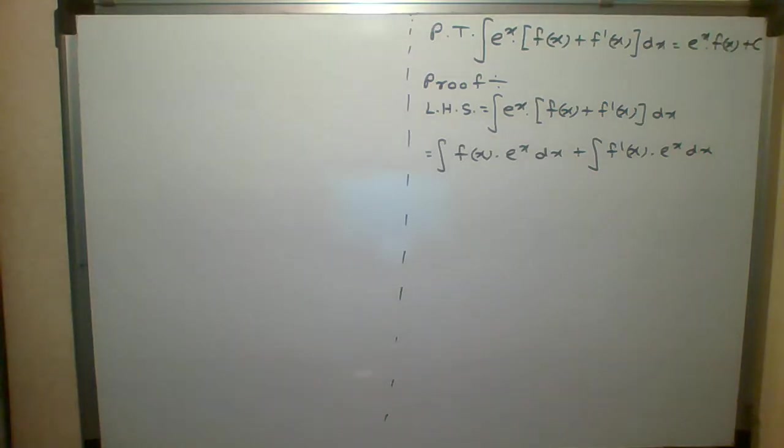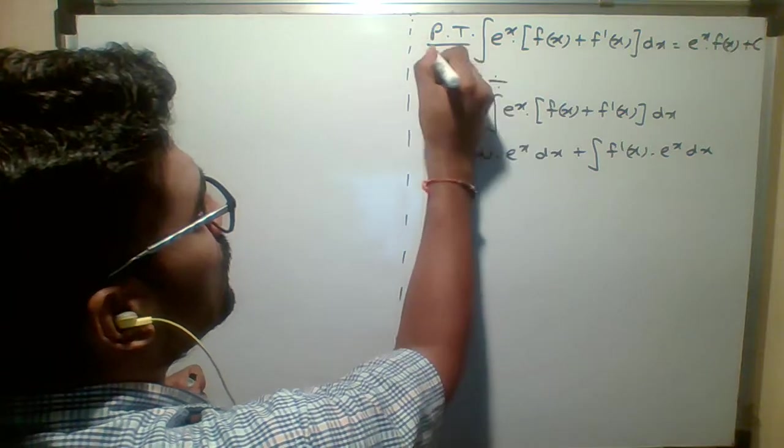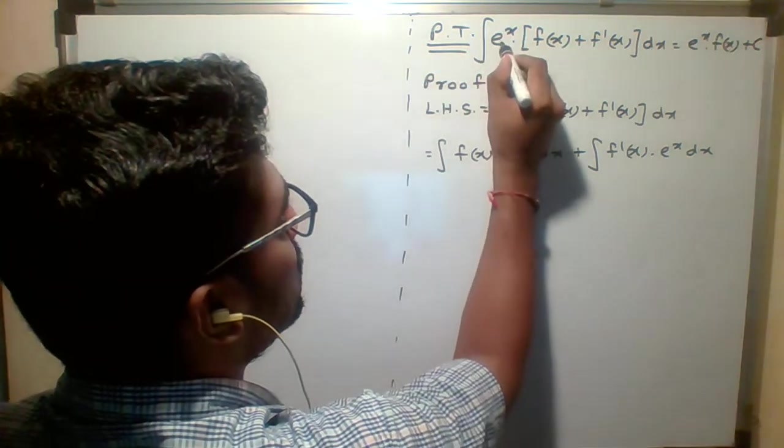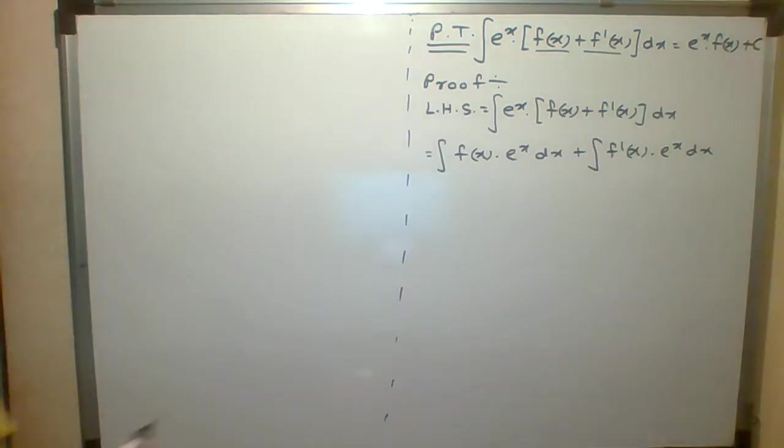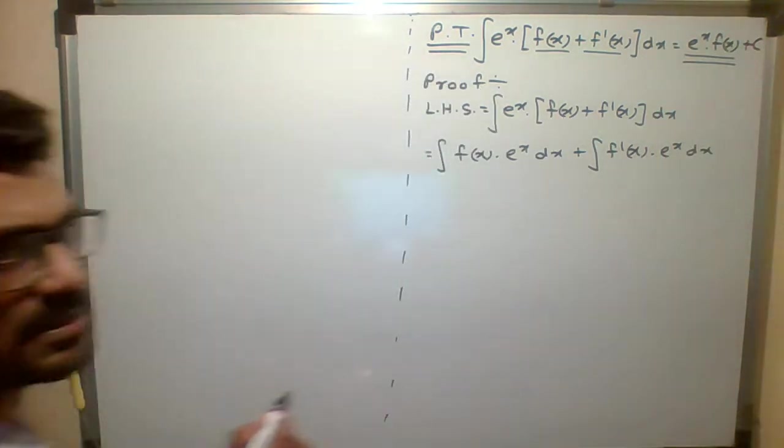So students, again let me explain. I am going to prove one theorem. In that theorem, what we have to prove? Integration of e raised to x in the bracket f of x plus f dash of x with respect to x is given by e raised to x into f of x plus c.